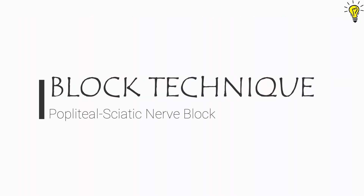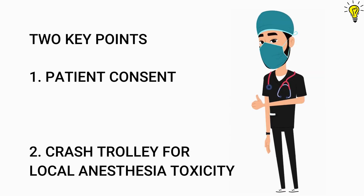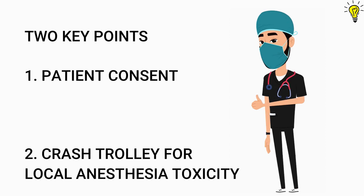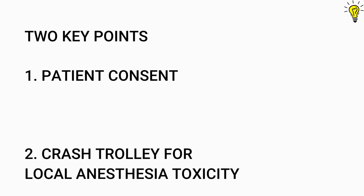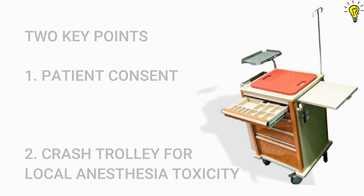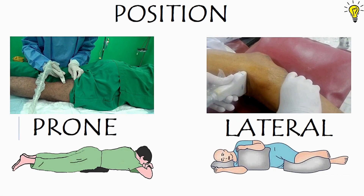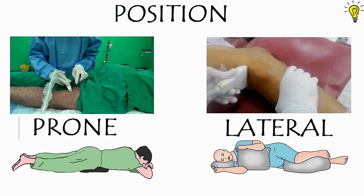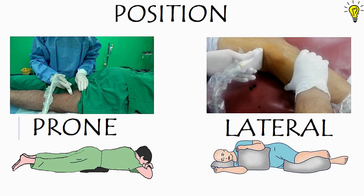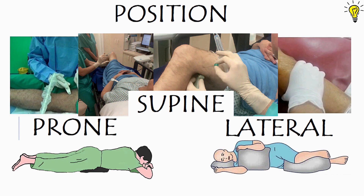Let's perform the popliteal block. When an examiner asks you to describe the steps, start with two key points: number one, consent of the patient, and number two, a crash trolley and all facilities should be available for local anesthesia systemic toxicity. For patient position, options include prone, lateral position with a pillow between the knees, or supine for lateral or medial approaches.